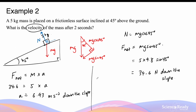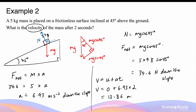Using the kinematic equation V = U + AT, with initial velocity U = 0 (the object starts at rest), plus 6.93 × 2 seconds after the mass starts moving, this gives a final velocity of 13.86 meters per second down the slope. Keep in mind that forces, acceleration, and velocity are all vector quantities, so in addition to magnitude you must also state the direction. This concludes the video on forces on a frictionless inclined surface.